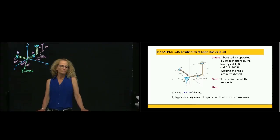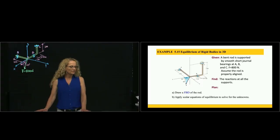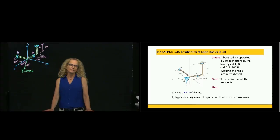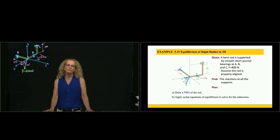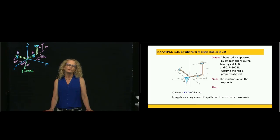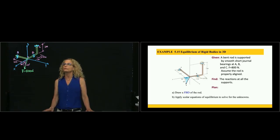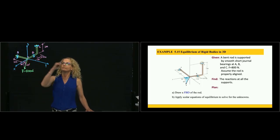This is problem 515, and this is equilibrium of rigid bodies in 3D. They are asking us to find the support reactions of the bearings, which are short bearings A, B, and C.